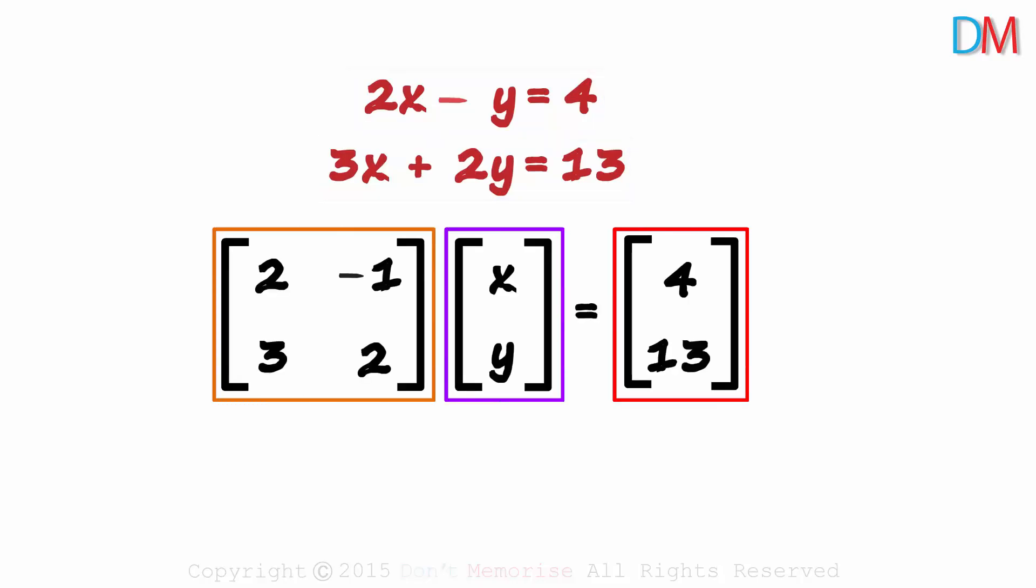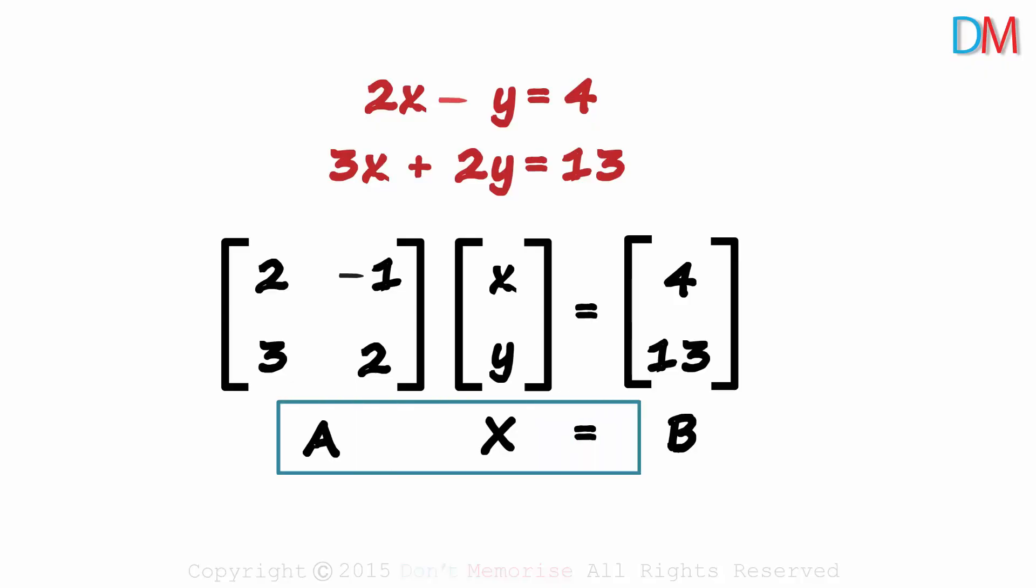Like this. We have three matrices here. We call them matrix A, matrix X, and matrix B. A times X is equal to B. So if we multiply both sides with A inverse, we get X on the left hand side and A inverse times B on the right hand side. So what we need is X, as that will give us the values of X and Y. We have B and we can find A inverse using the adjoint formula.